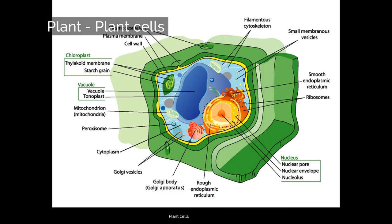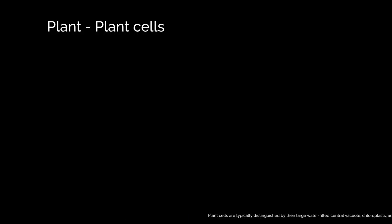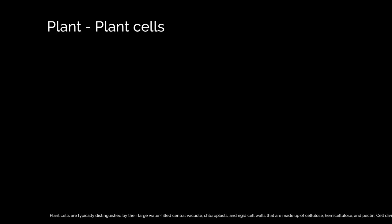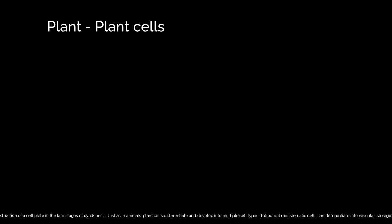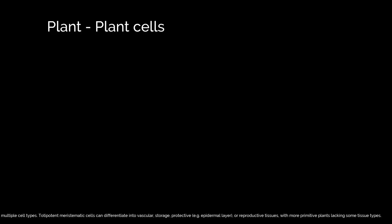Plant cells are typically distinguished by their large water-filled central vacuole, chloroplasts, and rigid cell walls that are made up of cellulose, hemicellulose, and pectin. Cell division is also characterized by the development of a phragmoplast for the construction of a cell plate in the late stages of cytokinesis. Just as in animals, plant cells differentiate and develop into multiple cell types. Totipotent meristematic cells can differentiate into vascular, storage, protective (for example the epidermal layer), or reproductive tissues, with more primitive plants lacking some tissue types.